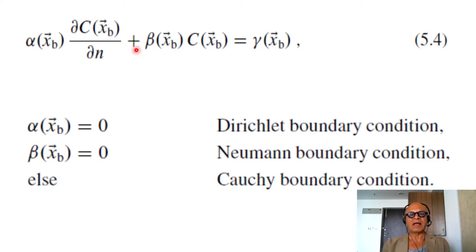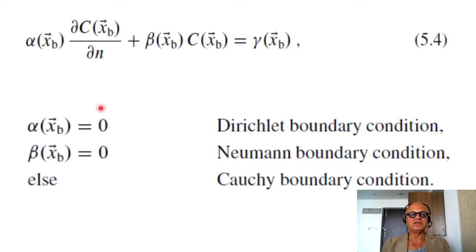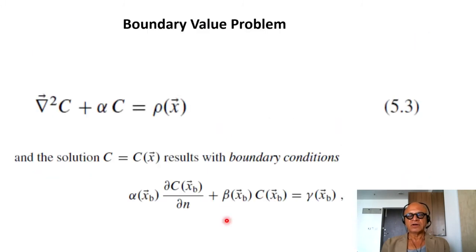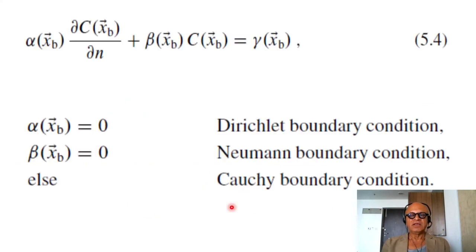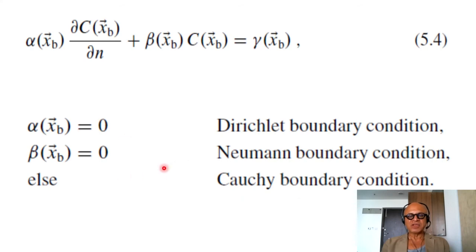Okay, so taking that equation, the boundary condition, then if alpha xb goes to 0, then we get Dirichlet boundary condition. If beta xb goes to 0, then this term goes to 0, so the boundary condition simplifies—that gives us Neumann boundary conditions. In that case, the flux at the boundary just becomes either prescribed or 0. If any other combination happens, then it's called the Cauchy boundary condition.